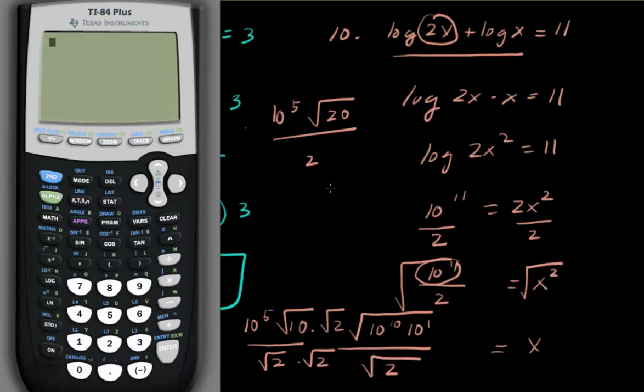So let's go ahead and do that. 10 to the 5th, divided by 2. So it should be 50,000 square root of 20. That's the final answer.